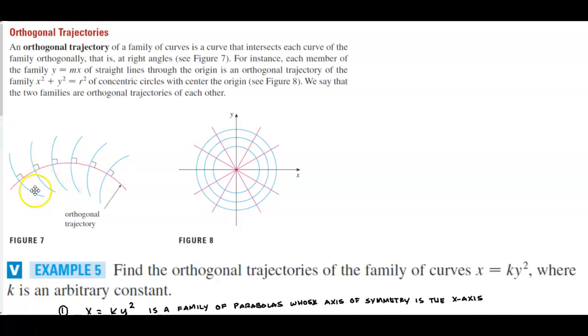If you can take a look at figure 7, for instance each member of the family y equals mx of straight lines through the origin is an orthogonal trajectory of the family x squared plus y squared equals r squared of concentric circles with center the origin as you can see in figure 8. We say that the two families are orthogonal trajectories of each other.